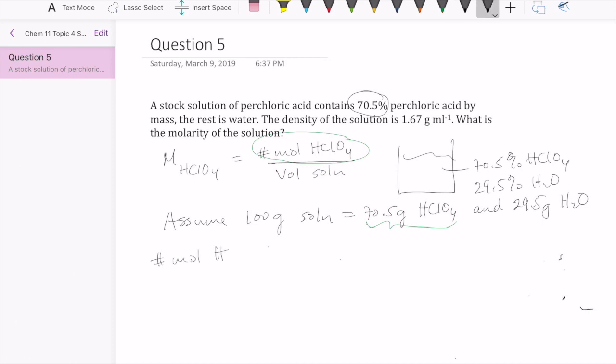The number of moles of the perchloric acid is just going to be 70.5 grams divided by the molar mass of perchloric acid, which is 100.4585 grams, or you can round it to 100 grams per mole there. You're going to get 0.70178 moles of perchloric acid.